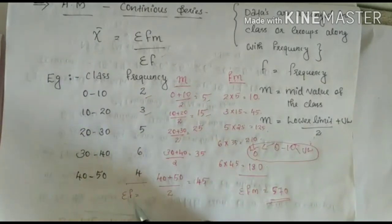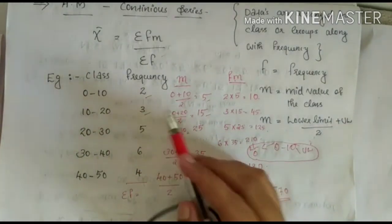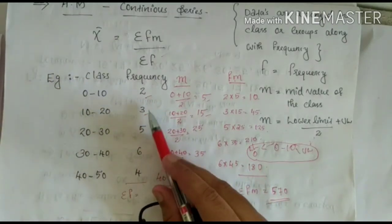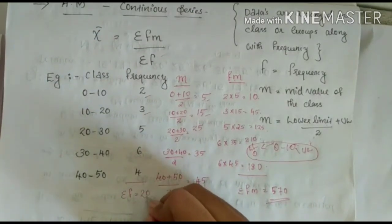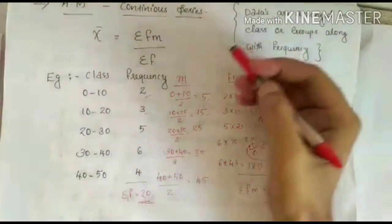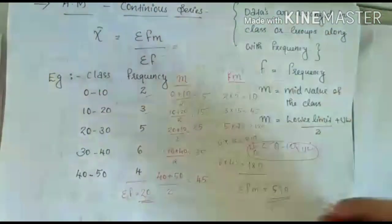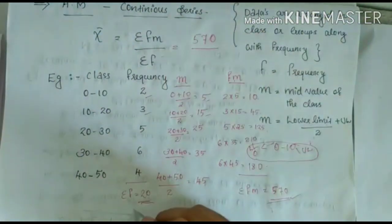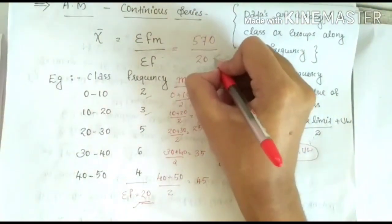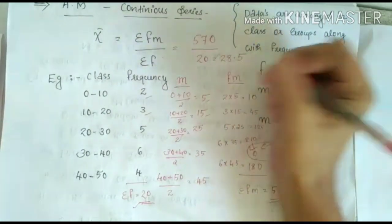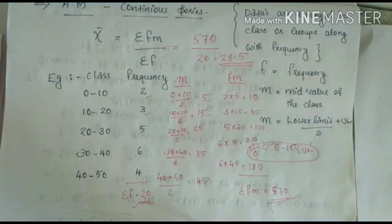Next, calculate sigma F — the total of the frequency column: 4 + 6 + 5 + 3 + 2 = 20. After finding sigma FM and sigma F, apply the equation: sigma FM divided by sigma F = 570 divided by 20. The answer is 28.5. The value of arithmetic mean is 28.5. Thank you.